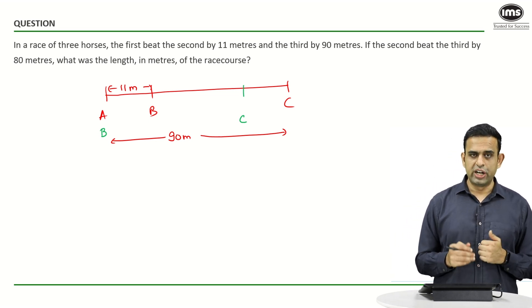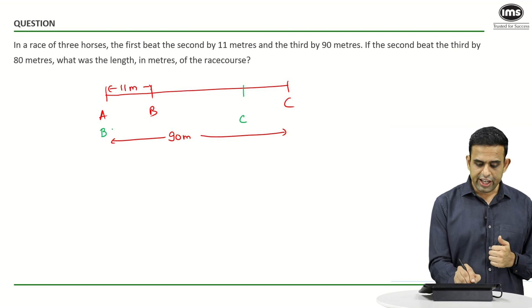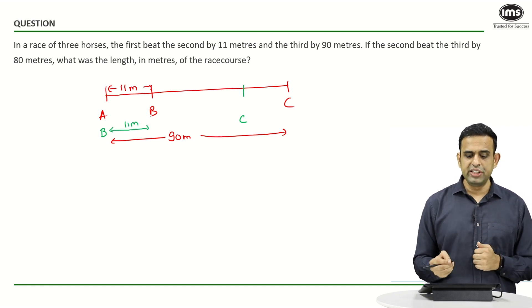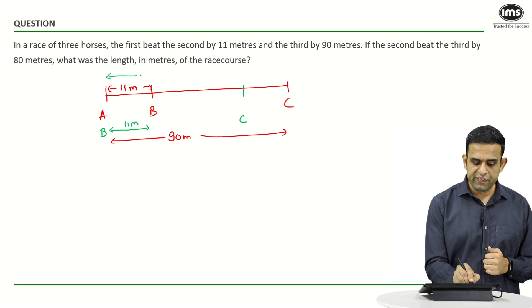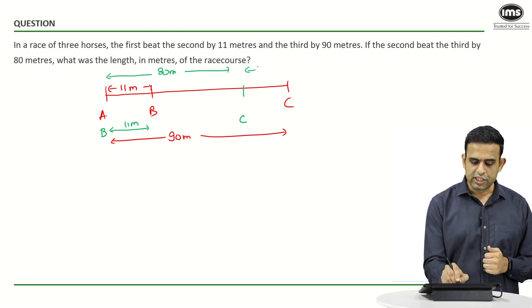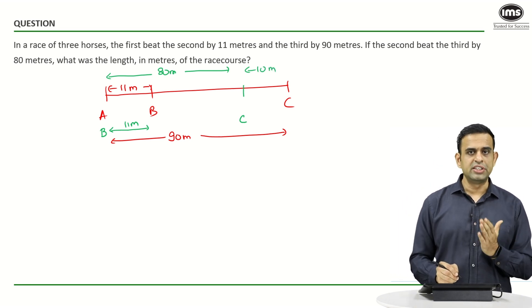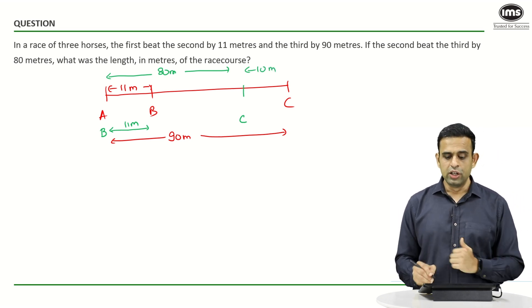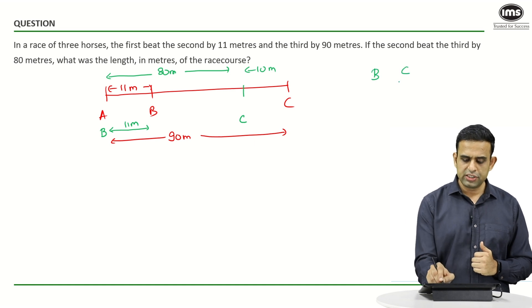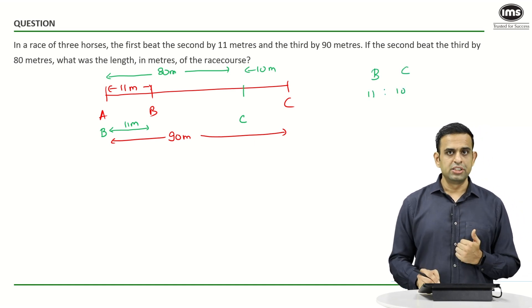In the time B has covered this 11, how much has C covered? Since B beats C by a length of 80 meters, this distance has to be 10. When B has covered 11, C has covered a distance of 10. So the speed ratio of B and C must be 11 is to 10.